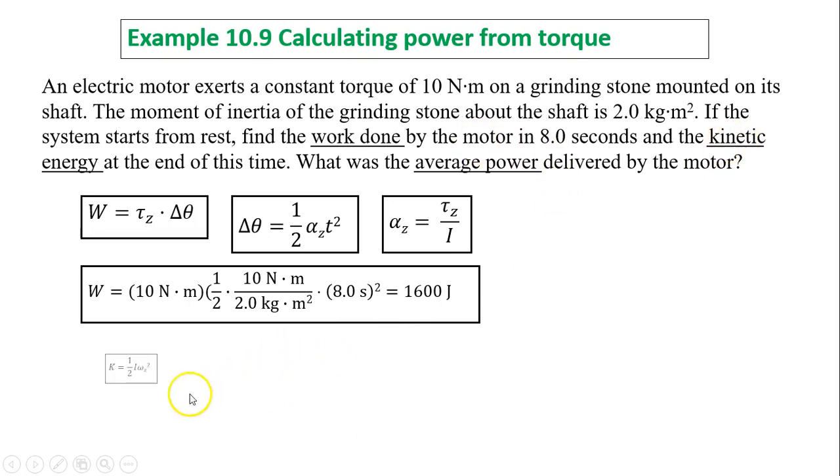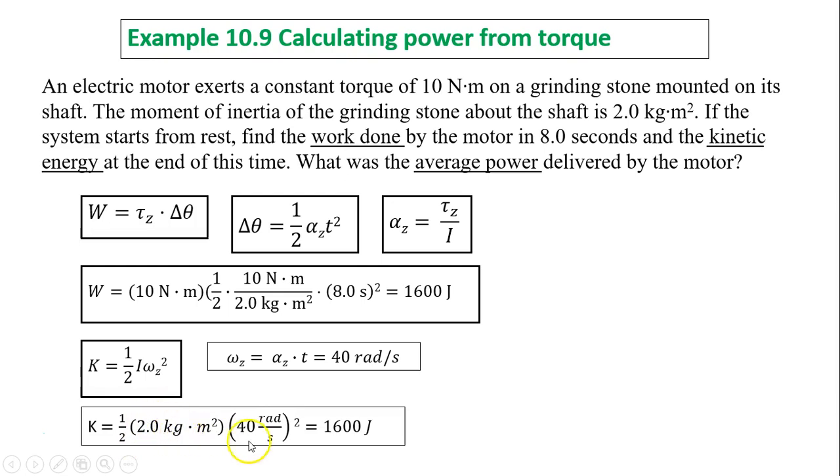What is the kinetic energy? Kinetic energy equals one-half I omega z squared. This omega z is the final omega. Omega z equals alpha times t because omega naught equals 0. Alpha is 10 divided by 2, that's 5. 5 times 8 is 40 radians per second. So K equals one-half times 2 times 40 squared. You'll have 1600 joules. That equals the work, so it verifies that kinetic energy equals work because the initial is 0.